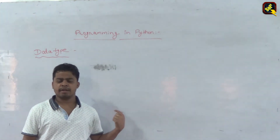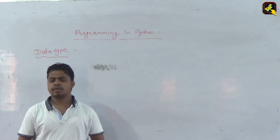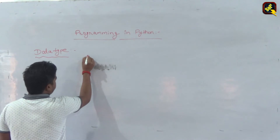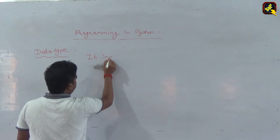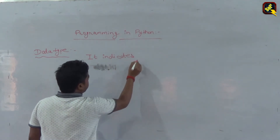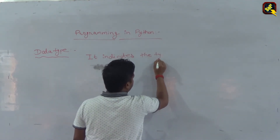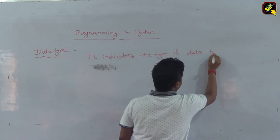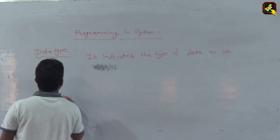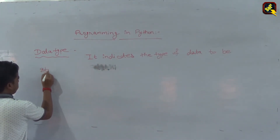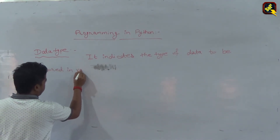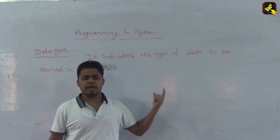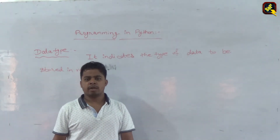In this video, we will show more information about the variable and we will show more information about the data type. Data type indicates the type of data to be stored in a variable. Basically, data type indicates what kind of data can be stored in a variable.